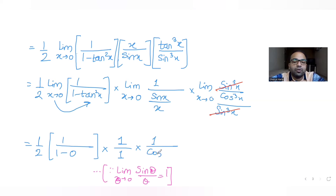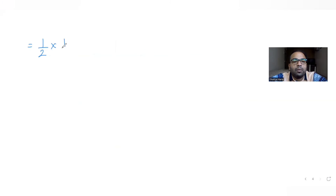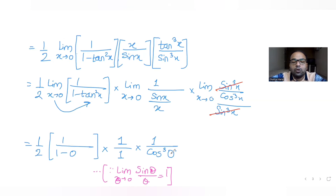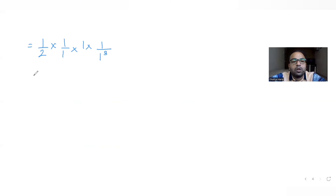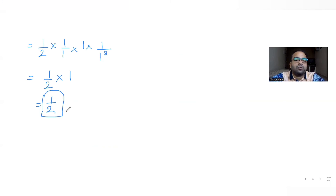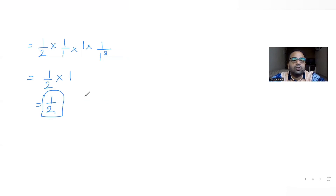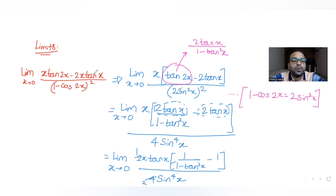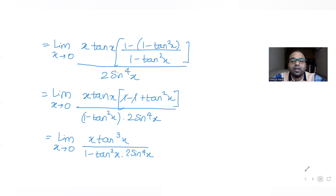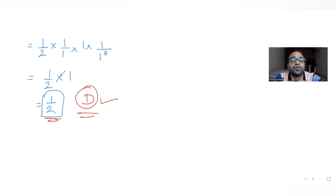Putting cos³(0): cos(0) is 1, so cos³(0) is 1³ which is also 1. So altogether we have: (1/2) × (1/(1 minus 0)) × 1 × 1 = 1/2. That is the answer for the question asked, which is 1/2, and if you see the options, the answer that matches is option D. So D is the correct answer.